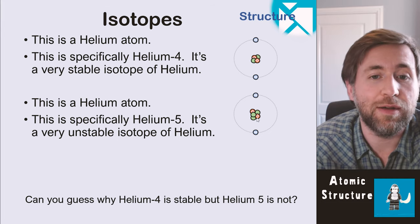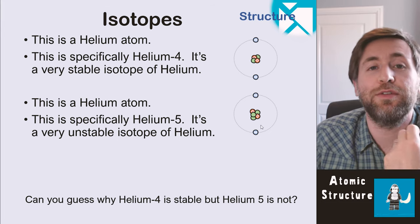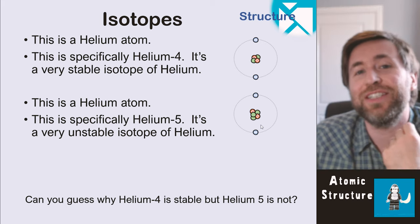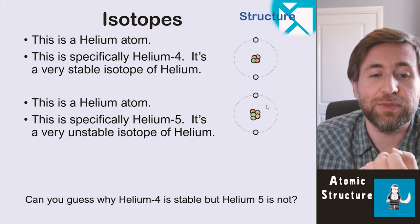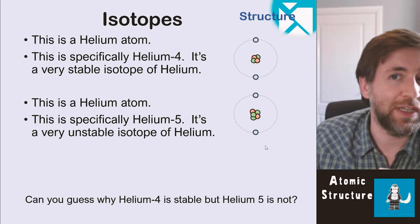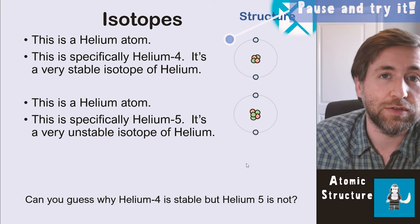Helium 4 has two protons and two neutrons as an incredibly stable nucleus. It is one of the most stable nuclei that there are. The isotope of helium, helium five, which has two protons and three neutrons is actually an unstable nucleus. It doesn't want to be in that arrangement. So why do you think pause and have a little thing? Why do you think helium four is stable, but helium five is not?